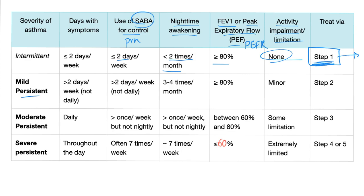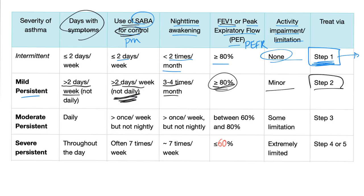Mild persistent asthma: symptoms more than two days per week but not daily, use of short-acting beta agonists more than two days per week but not daily, nighttime awakening three to four times per month, FEV1 still greater than or equal to 80%, minor impairment. Treat via step two. Moderate persistent asthma: daily symptoms, use of short-acting beta agonists more than once per week but not nightly, nighttime awakening more than once per week but not nightly, FEV1 between 60–80%, some activity limitation. Treat via step three.